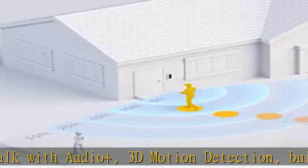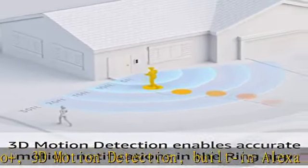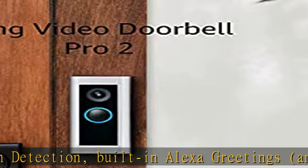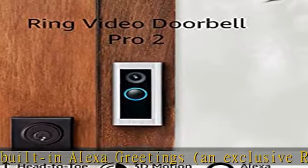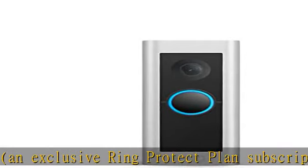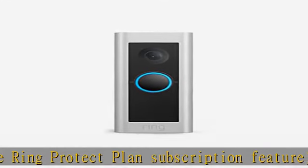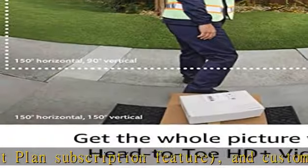Customizable privacy settings let you see more of who stops by and check in on package deliveries with improved 1536p head-to-toe HD video. Know when someone's in your front yard with advanced motion settings and get more accurate real-time alerts in the Ring app. Pinpoint motion and distance with 3D motion detection.